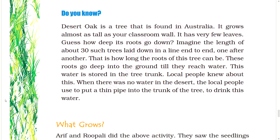Do you know? Desert Oak is a tree found in Australia. It grows almost as tall as your classroom, but has very few leaves. Imagine the length of about 30 such trees laid end to end — that is how long the roots of this tree can be. These roots go deep into the ground until they reach water. This water is stored in the tree trunk. When there was no water in the desert, local people used to put a thin pipe into the trunk of the tree to drink this water.